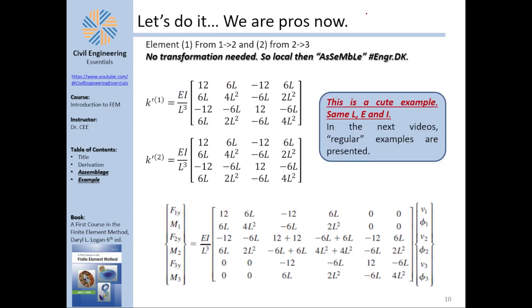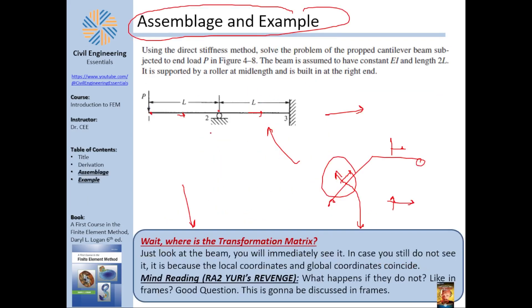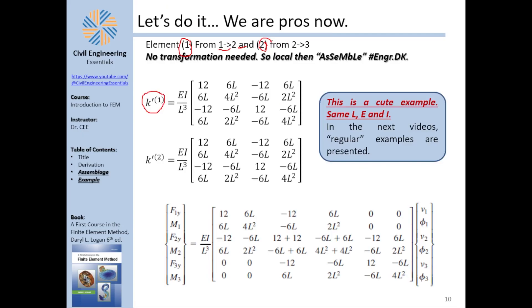Element one connects node one to node two; element two connects node two to node three. The local stiffness matrix of element one is (EI/L³)·[12, 6L, −12, 6L; ...] with node one and node two in the rows/columns. Similarly for element two with nodes two and three. Now we assemble the global stiffness matrix by superimposing contributions at shared nodes.